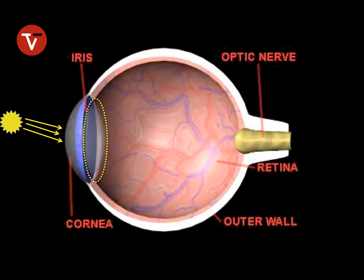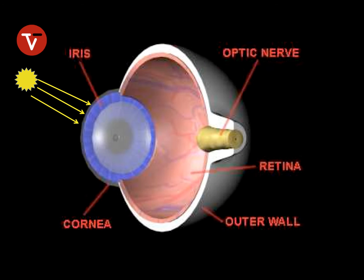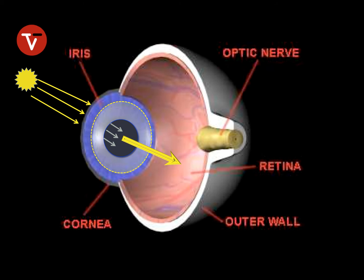Once light strikes the back wall of the eye, it hits the retina, which then generates a signal that will be carried from the eye by a cable called the optic nerve. After passing through the crystal clear lens, light is focused onto the retina where an electrical signal is generated and then carried to the brain by the optic nerve.